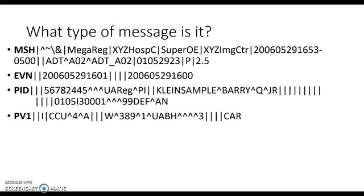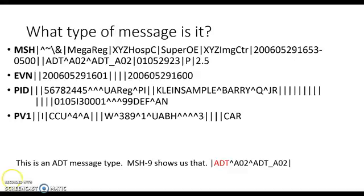In the PID segment you would find patient name, MRN, and other information related to identifying the patient. PV1 is the patient visit segment — here you would find information related to the visit, like the patient's doctor who ordered the test, and whether the patient is an inpatient or outpatient. If we look at MSH 9, it shows us that this type of message is an ADT.